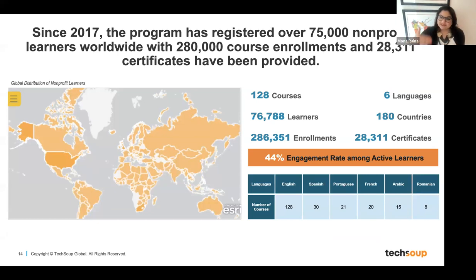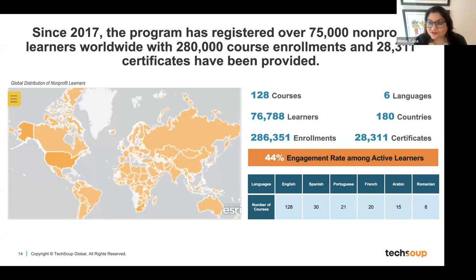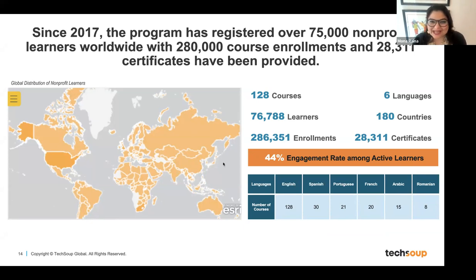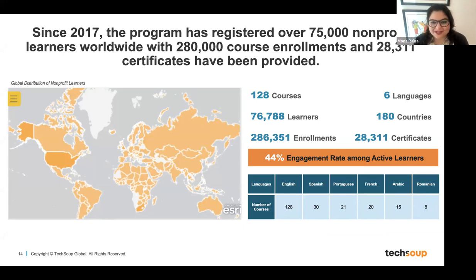These cohort programs are super engaged, they take a lot of time, but we find a lot of value from offering them. Since 2017, the program has registered over 75,000 nonprofit learners worldwide. We have learners in 180 countries, and our courses have been taken over 280,000 times.